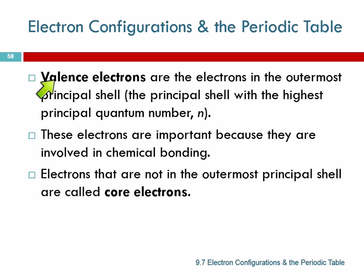The valence electrons are the electrons that are in the outermost principal shell, the principal shell that has the highest principal quantum number, the highest n.